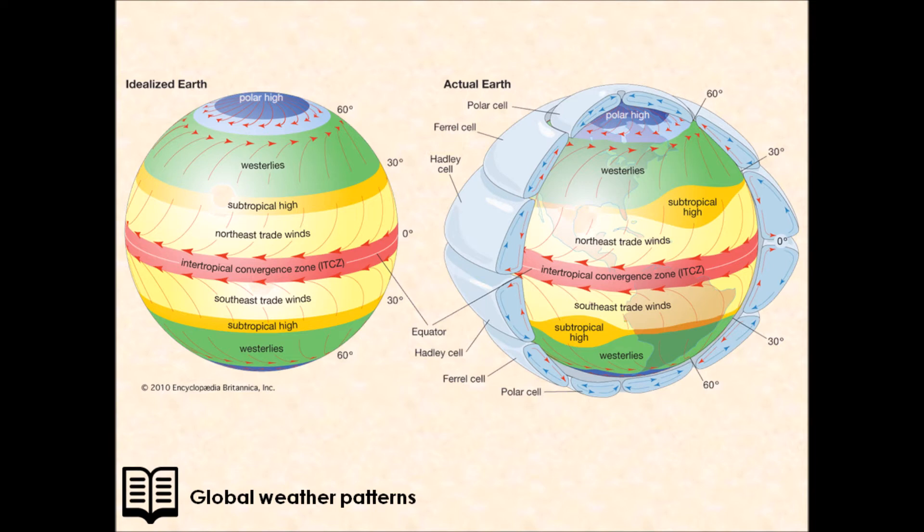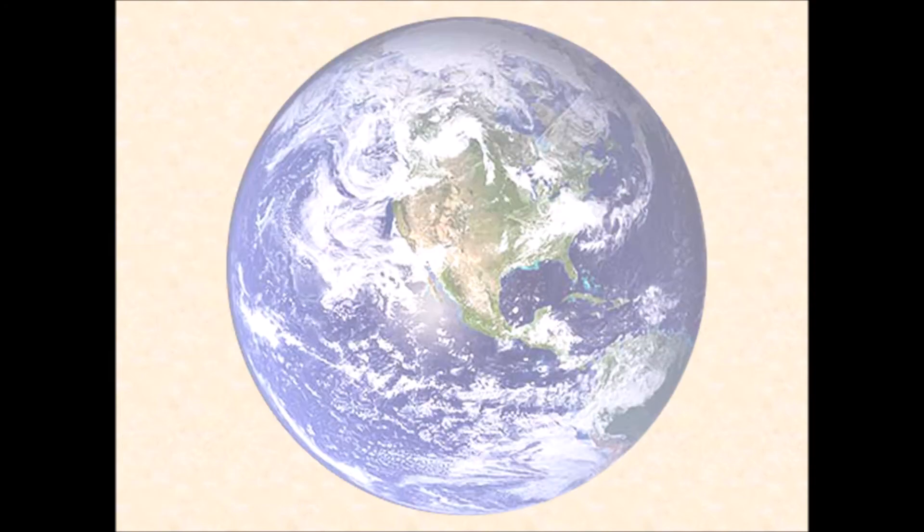This air circulates between areas of high and low pressure belts as surface winds or trade winds. The differences in air pressure, this high and low air pressure, are caused by differences in temperature between the equator and the poles, driven by solar radiation from the sun.